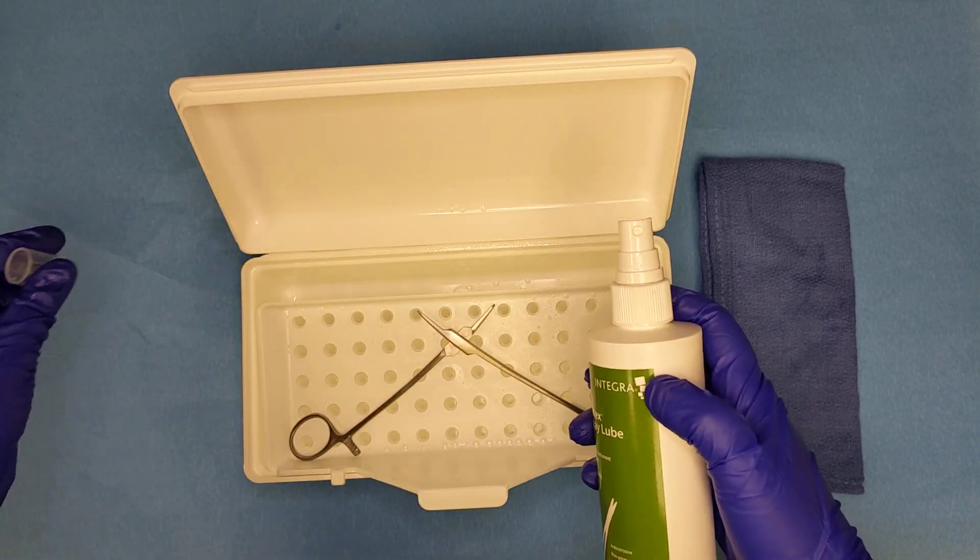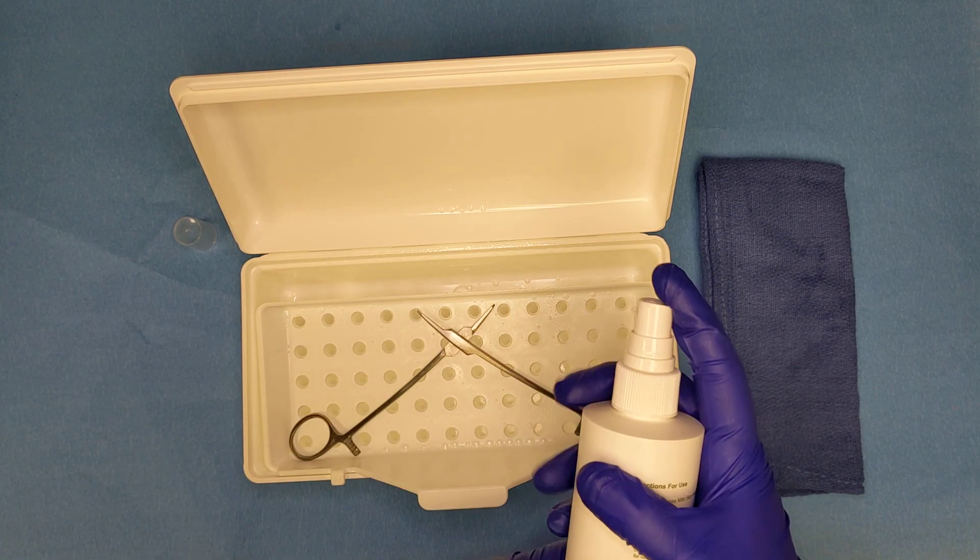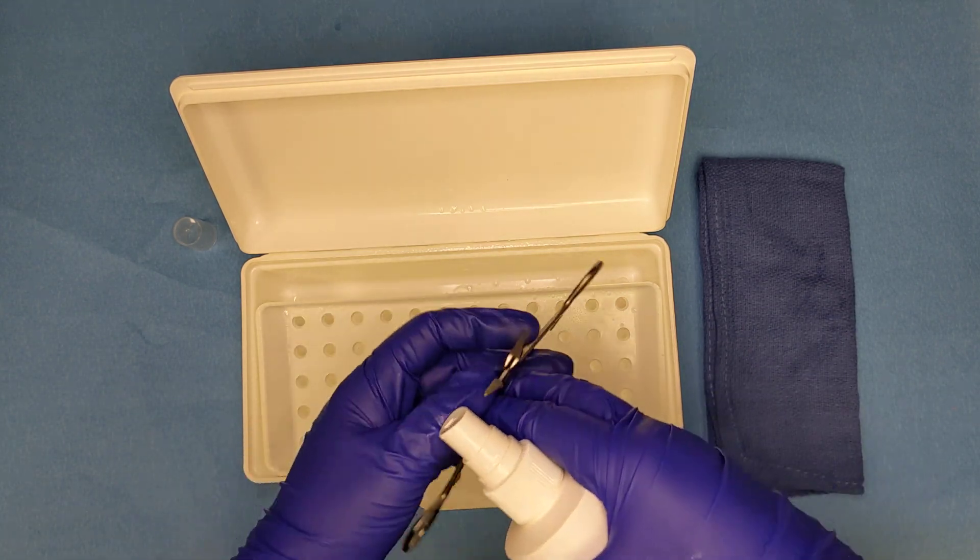Then we're going to apply it to our instrument only at the point where it needs to be lubricated, the moving point. So in this case just apply to the box lock, one spritz on that side, flip it over, one spritz on this side.